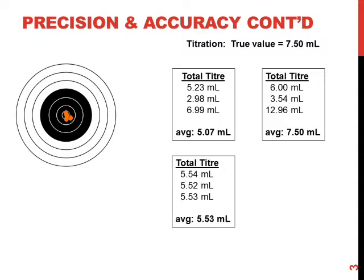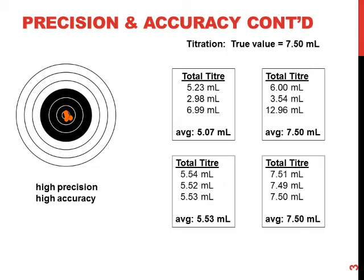In any good game of throwing darts, this is what you strive for: all of your throws very close together and very close to the bullseye — high precision and high accuracy — as you would strive for in titrations. This trial shows high precision and high accuracy, as the titers show very little deviation among them and their average is very close to the true value.